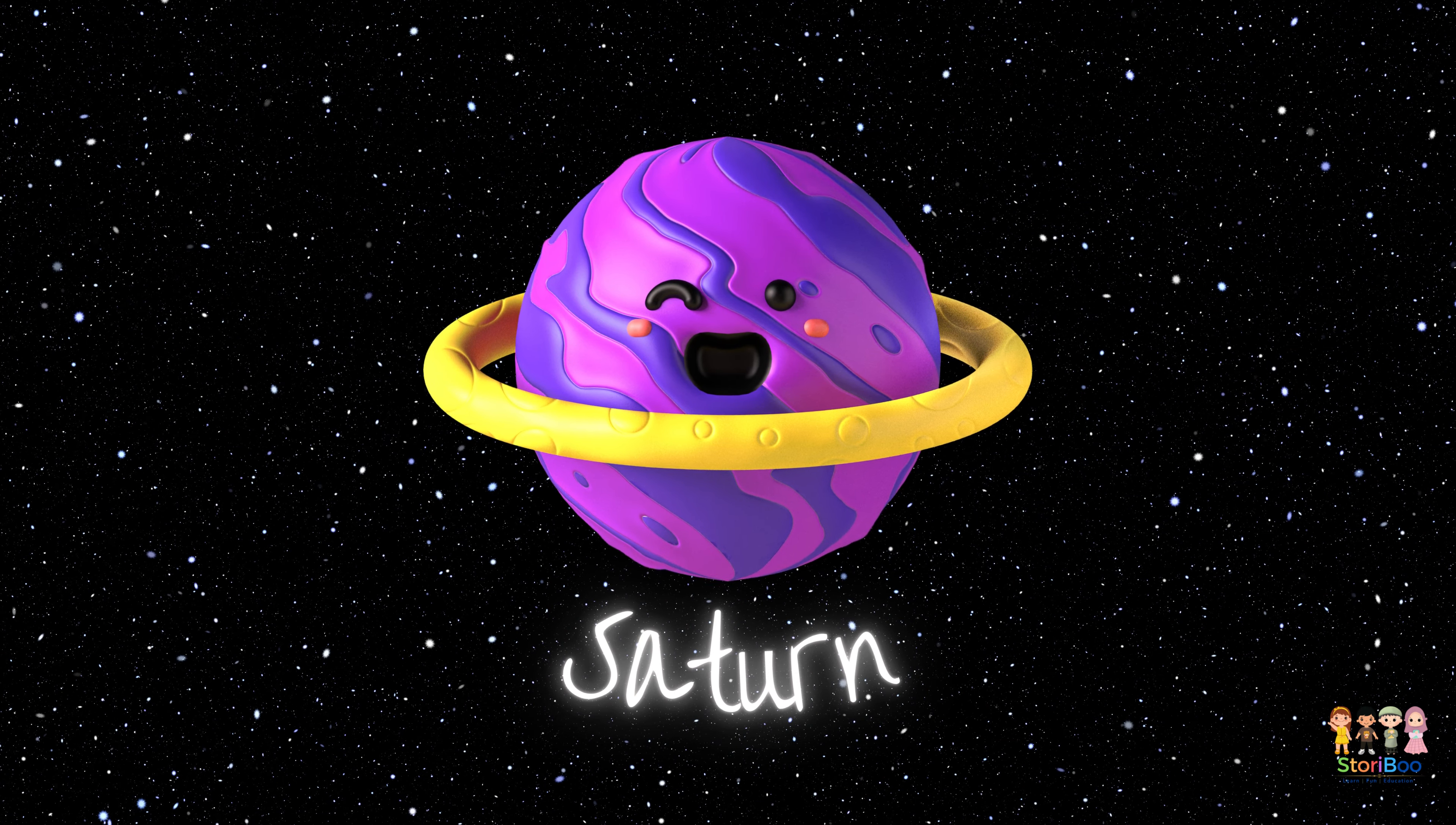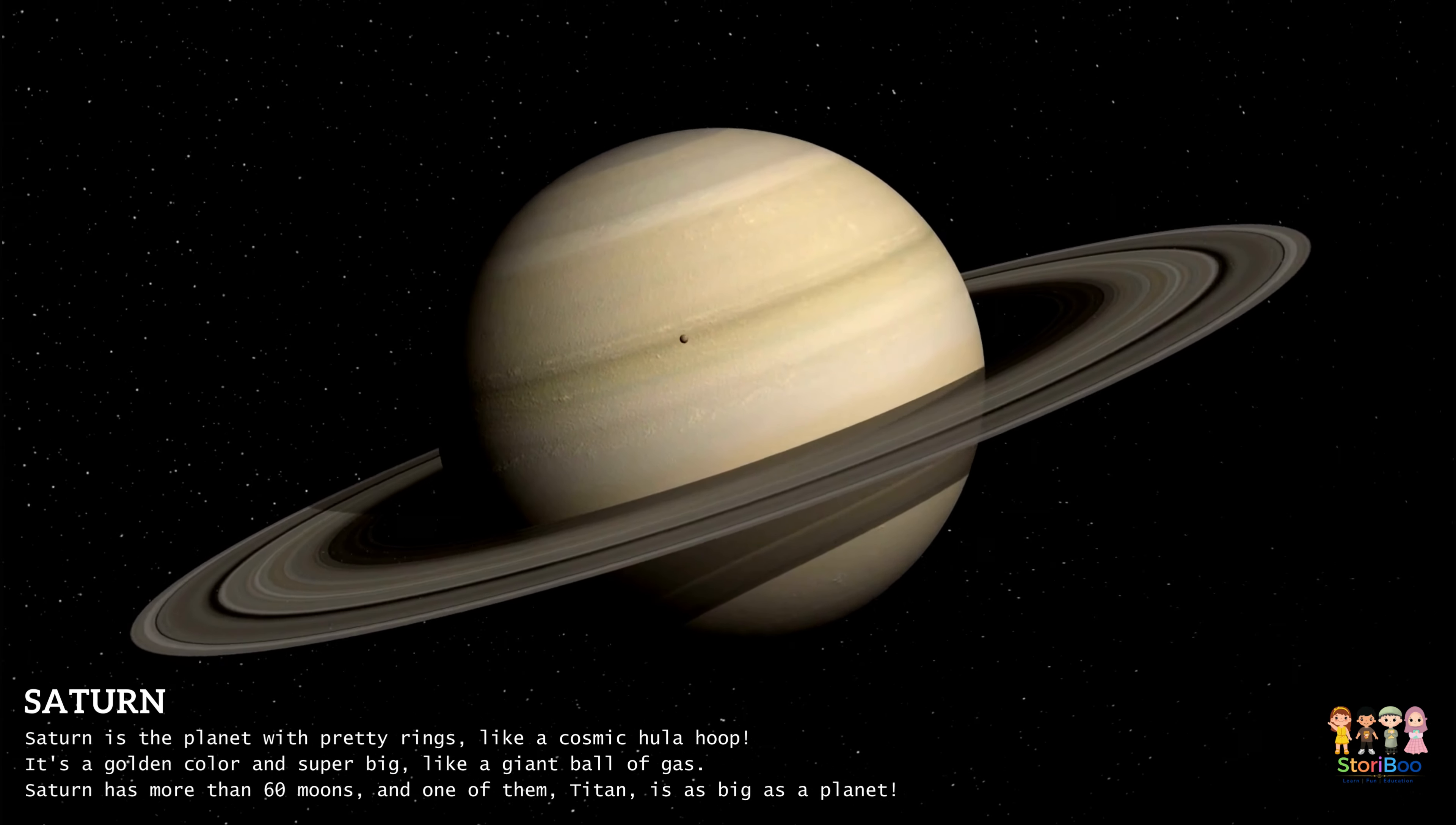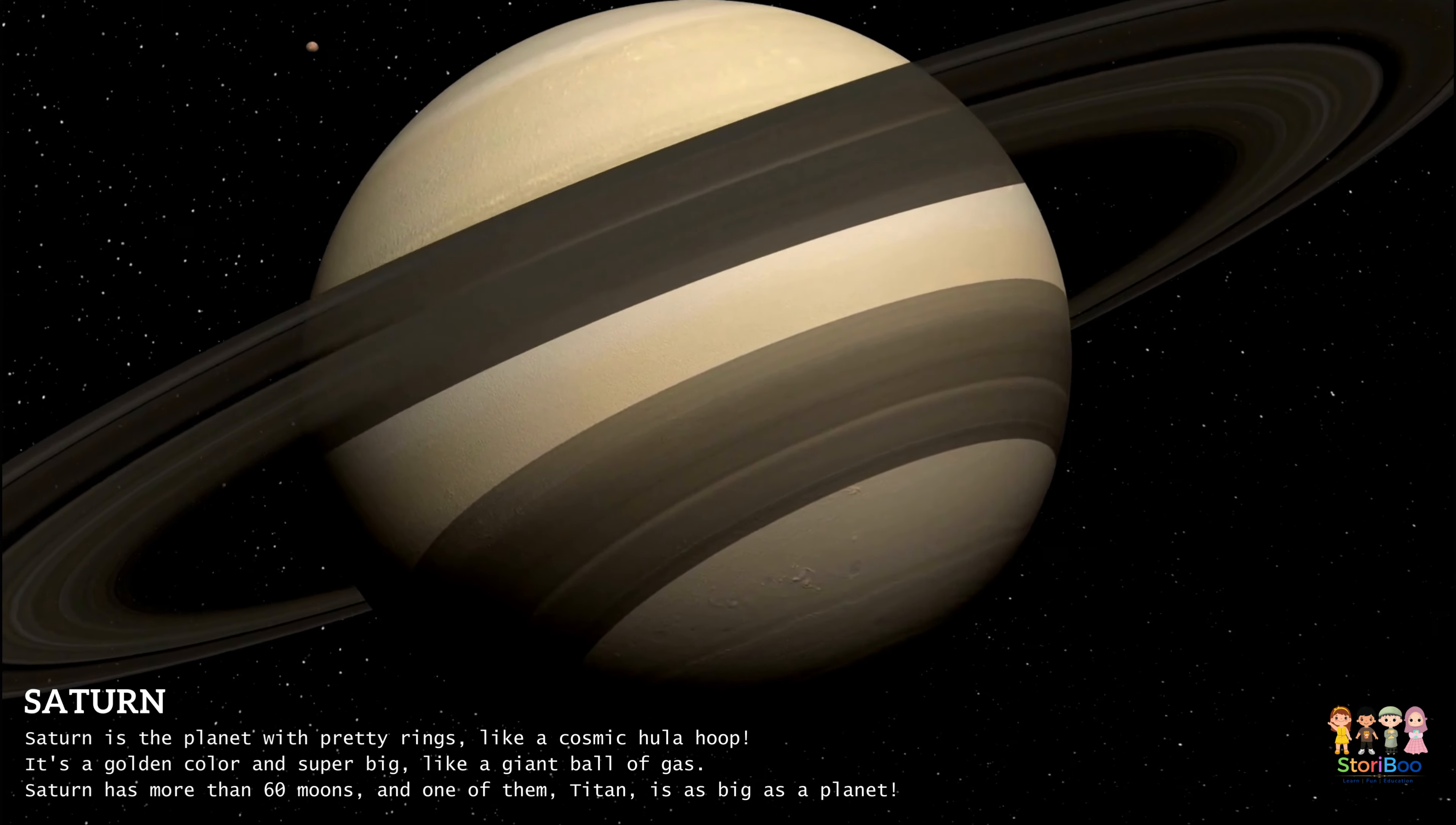Saturn is the planet with pretty rings like a cosmic hula hoop. It's a golden color and super big like a giant ball of gas. Saturn has more than 60 moons and one of them, Titan, is as big as a planet.